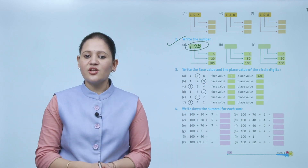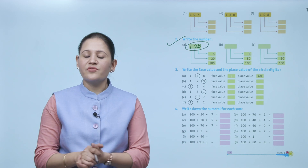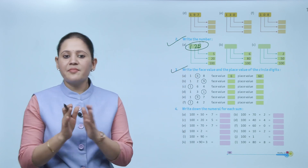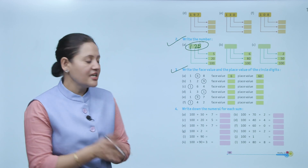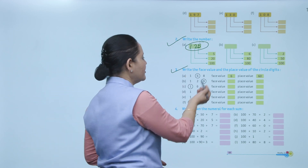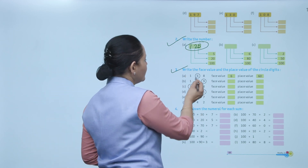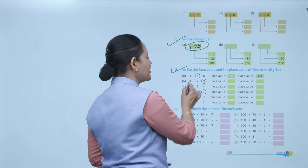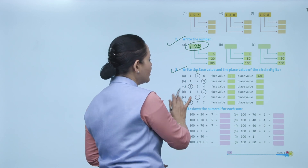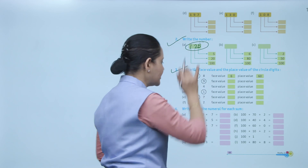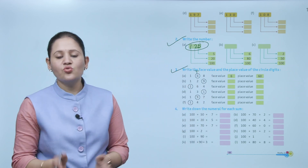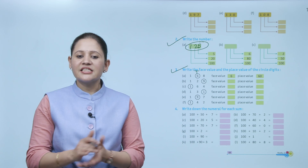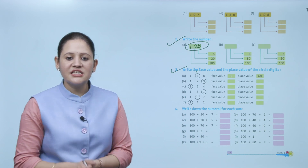Next: write the face value and the place value of the circled digit. Our number is 168. Face value is the digit itself — so for 6, the face value is 6. The place value: since 6 is at the tens position, the place value is 60. Like this, you have to write the face value and place value of the given digit.